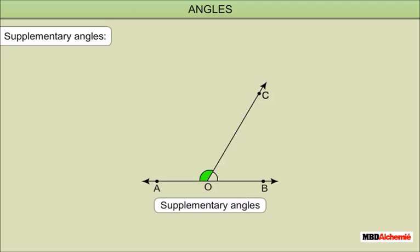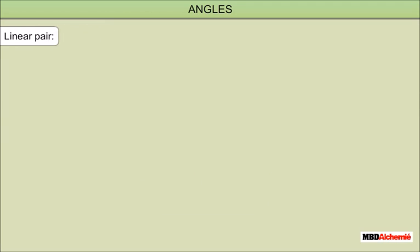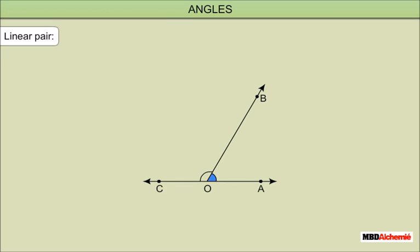For example, angle AOC plus angle BOC equals 180 degrees, so angle AOC and angle BOC are supplementary angles. Linear Pair: Two adjacent angles are said to form a linear pair if their non-common arms are two opposite rays. Angle AOB and angle BOC are two adjacent angles whose non-common arms are the opposite rays OA and OC, so they form a linear pair.